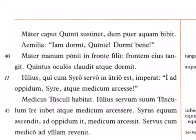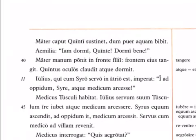Iulius, qui cum suo servo in atrio est, imperat: I ad oppidum, Sure, atque medicum arcesse — Iulius, who is in the atrium with the slave Sirus, commands: go to town, Sirus, and summon or fetch the doctor. Arcesse, I believe, is a new word in this chapter, meaning 'to summon,' 'fetch,' or 'get.'